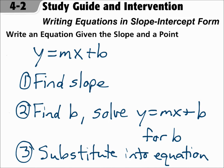This is lesson 4.2, writing equations in slope intercept form. Your objectives are to write an equation of a line in slope intercept form given the slope and one point, and to write an equation of a line in slope intercept form when given two points.